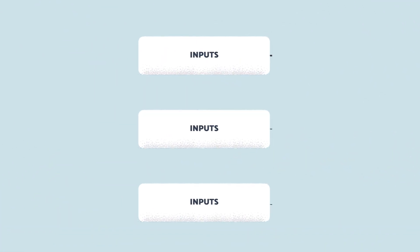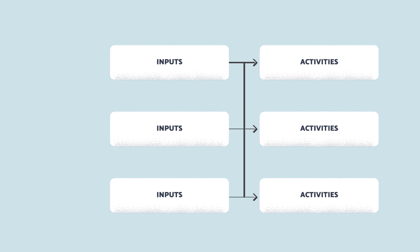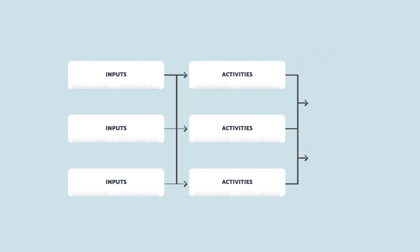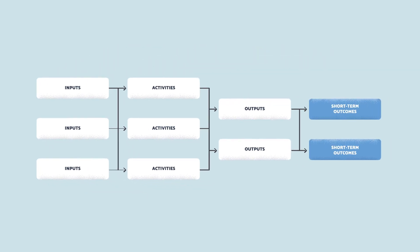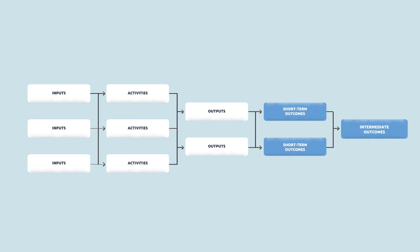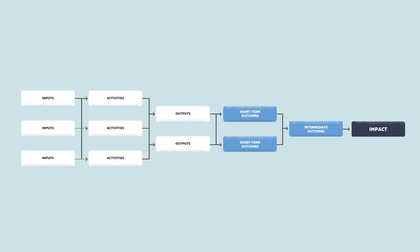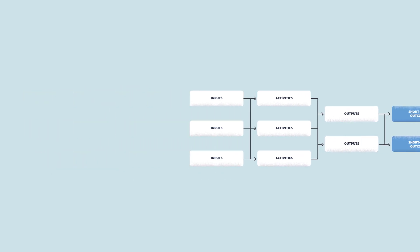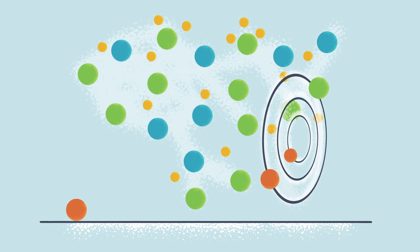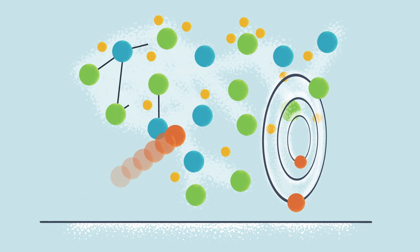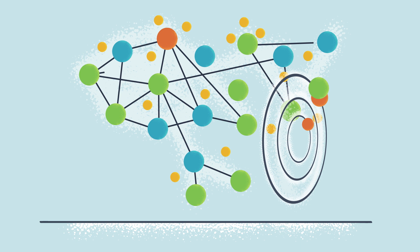In step two, stakeholders use a participatory process to create a logic model, which visualizes how a health adaptation is expected to work. We know that health adaptations are complicated by time, scale, and complexity. Creating logic models to describe them is equally complicated.